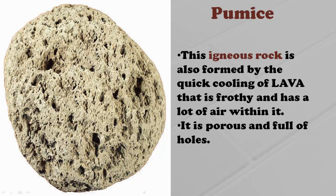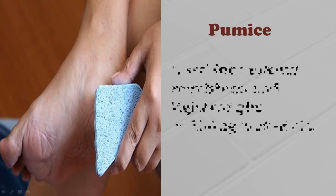Pumice is an igneous rock also formed by the quick cooling of lava — specifically lava that is frothy and has a lot of air within it. It is porous and full of holes. Pumice is used as a scrubber and for making lightweight building materials.